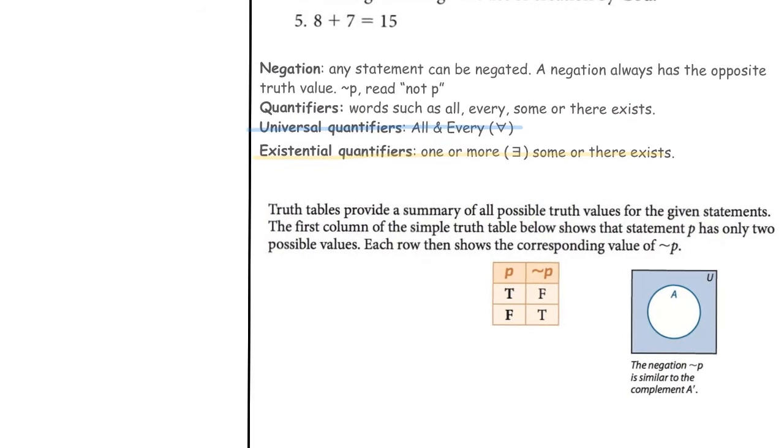A truth table - once again, feeling like logic - a truth table provides a summary of all possible truth values for the given statement. For example, if our conditional is P, P can either be true or false. If P is true, then the negation is false. If P is false, then the negation is true.